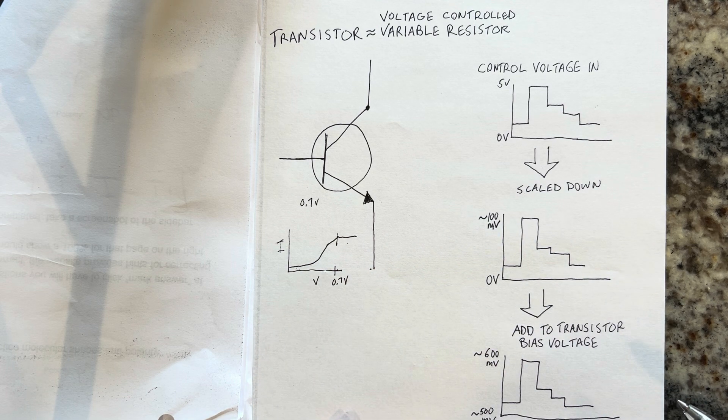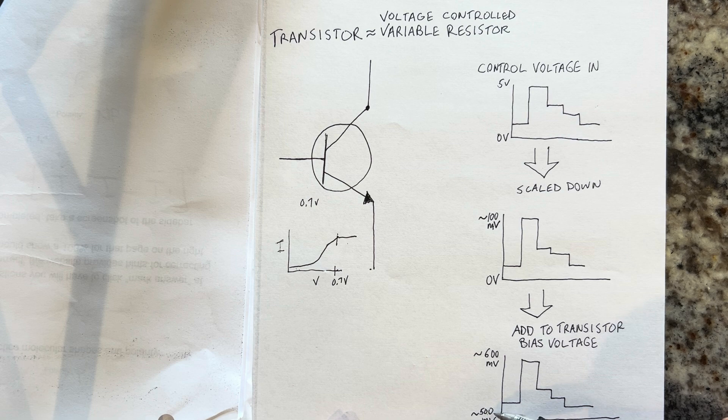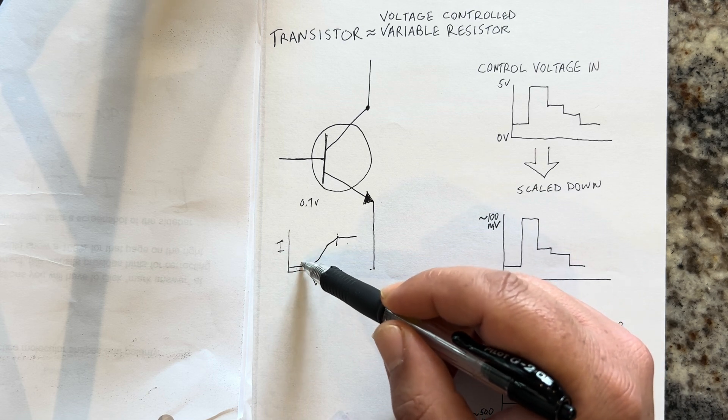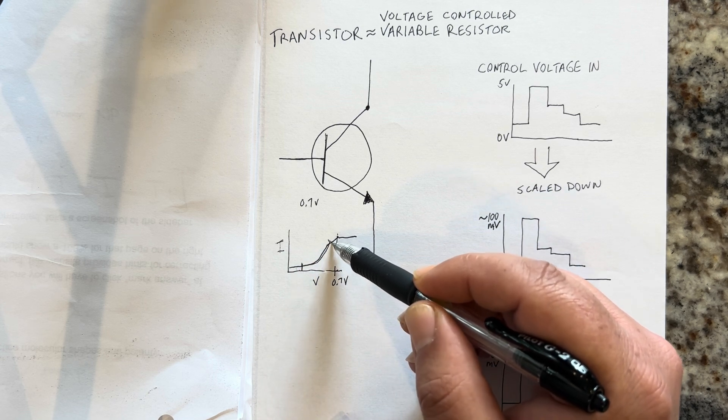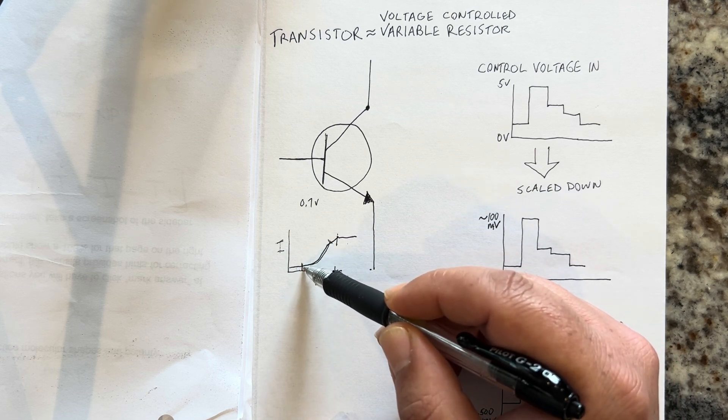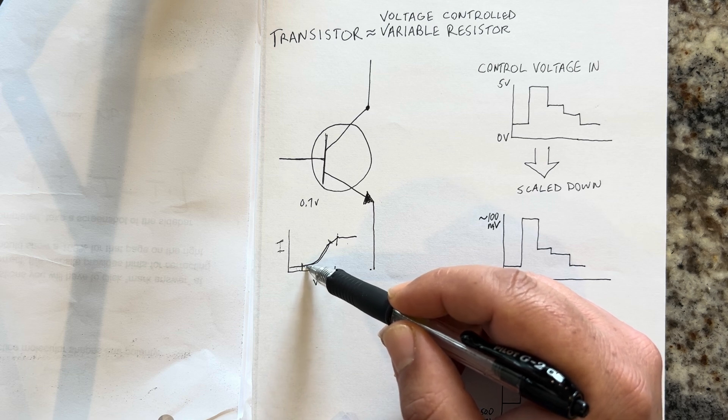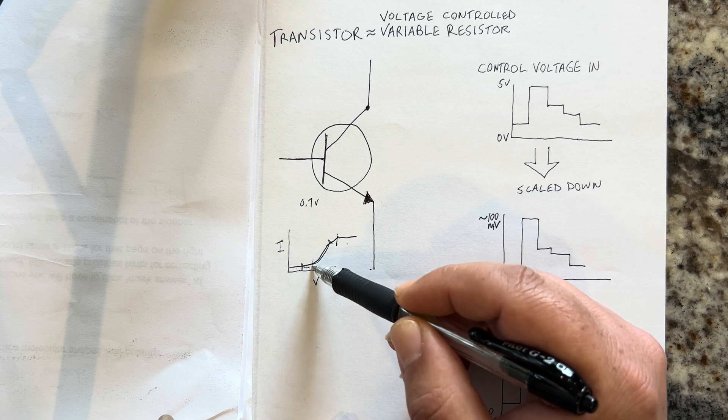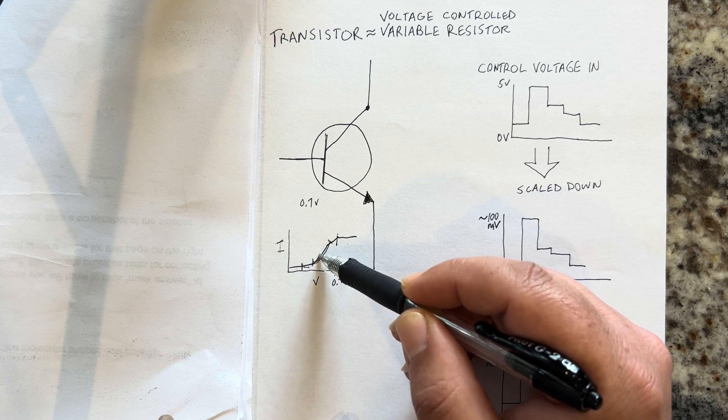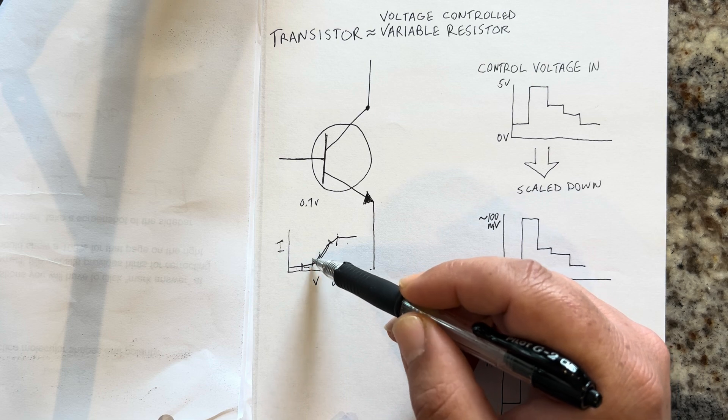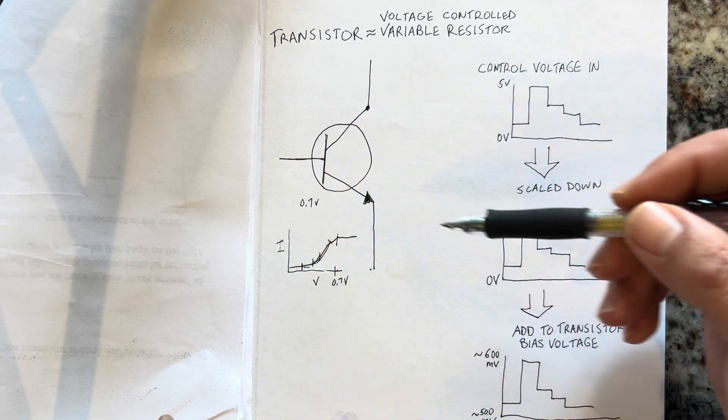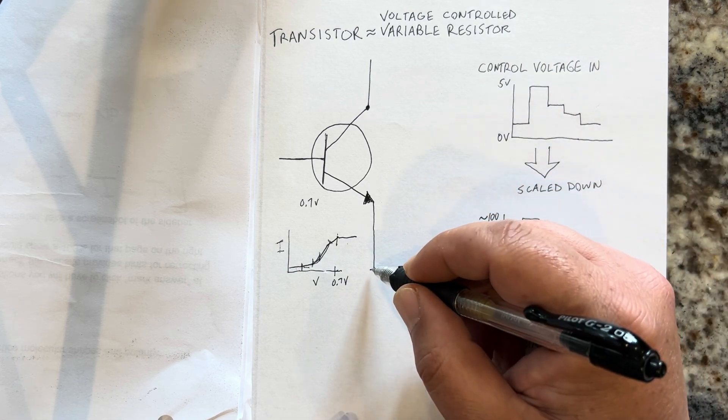We want the control voltage to be around between 500 millivolts and 600 millivolts, which takes us into this exponential range where a tiny increment or incremental voltage gives you potentially a very high change in the current, which makes this transistor into a variable resistor to ground.